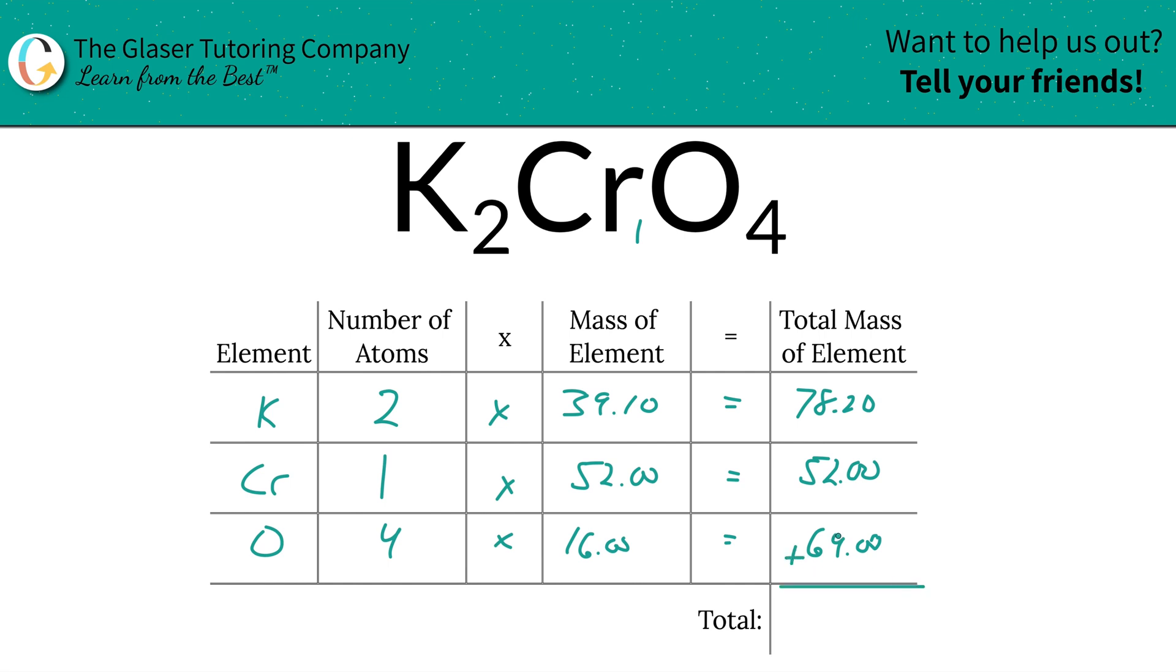To find the total mass of the entire compound, which is what we're really interested in, we simply add those together. The total mass is 194.20. There you go, that's the first step of the process—the total mass. Now that we've found the total mass, we can easily find those percents. I'm going to add a column to the table now.